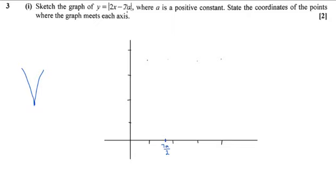If it was not a mod function, it would then have a gradient and come down like this, and it would hit the y-axis at negative 7a. So when we flick this line back up, it's going to hit the y-axis at positive 7a.